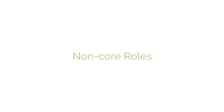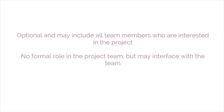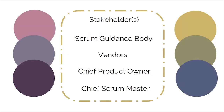Now let's take a closer look at the non-core roles. The non-core roles are optional and may include all team members who are interested in the project. They have no formal role in the project team, but they may interface with the team. However, they may not be responsible for the success of the project. The non-core roles include stakeholders, the Scrum guidance body, vendors, the chief product owner, and the chief Scrum master.